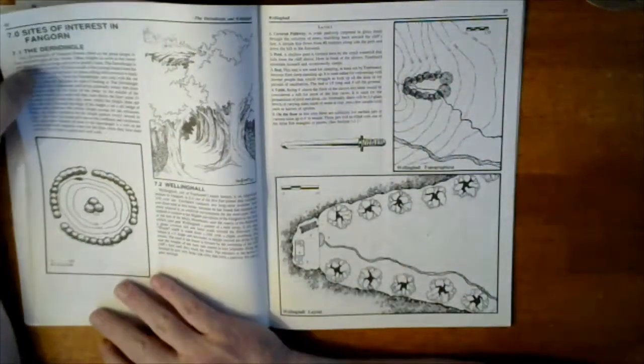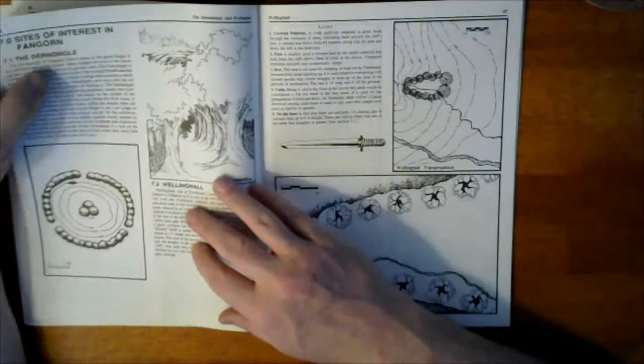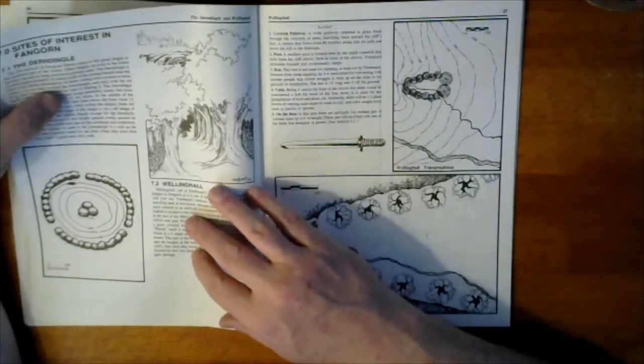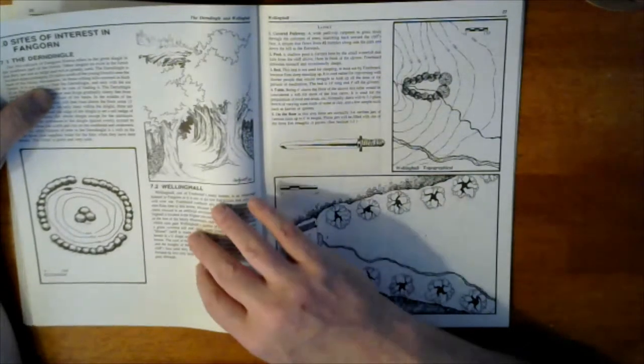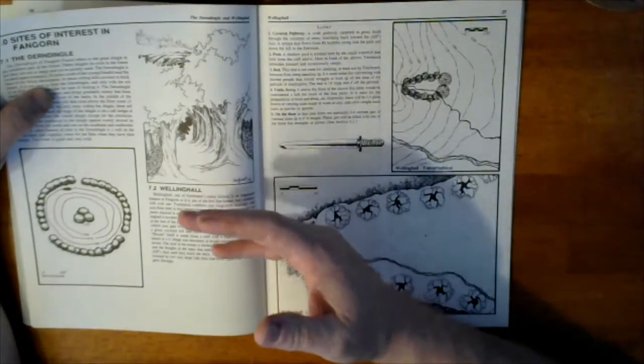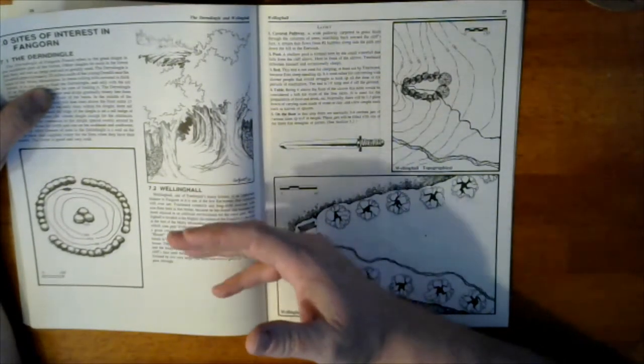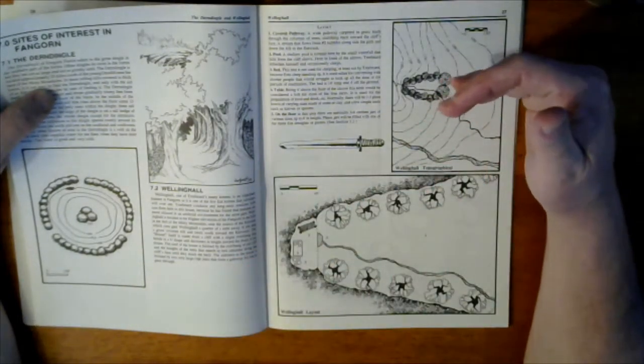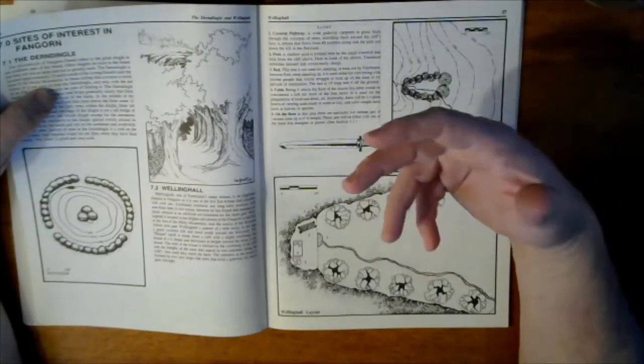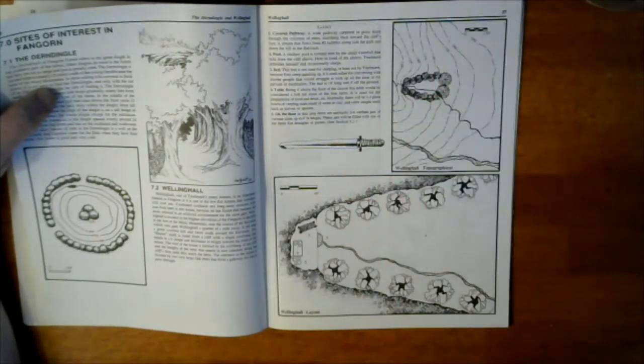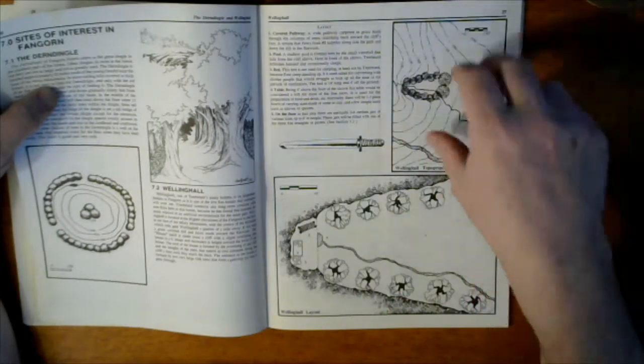So back to the forest itself. Now we have places of interest. The Derndingle, which is a meeting area for the Ents. Wellinghall, one of Treebeard's primary residences. This is the one most common, closest to the border or the edge of the forest, which he's most likely to entertain a guest friend such as Merry and Pippin. Perhaps Gandalf has been here.